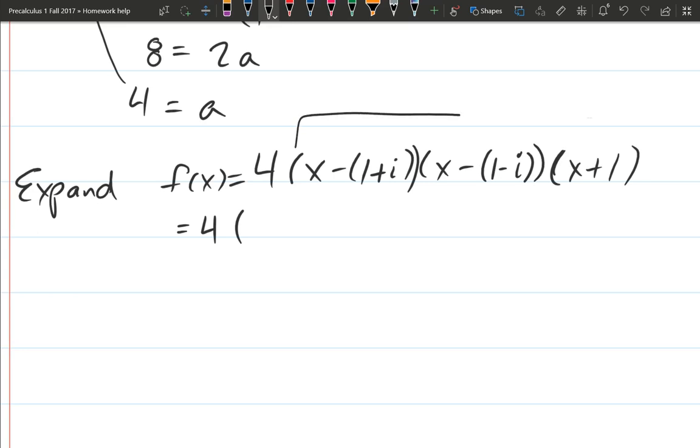Going right here, x times x, x squared, no problem. Now we're going to go outside, inside. Here's our outside terms. We get minus x times 1 minus i. So it's x times negative 1 minus i. Now we're going to go inside. It's another negative x times 1 plus i.